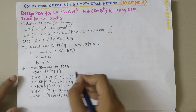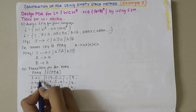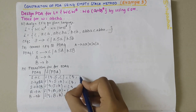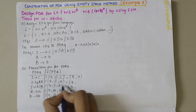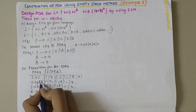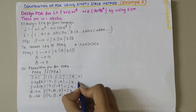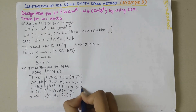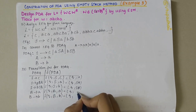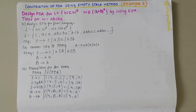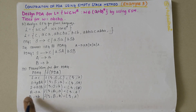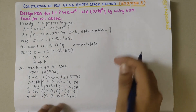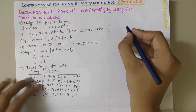After C, nothing remains so we write lambda. After A, S A is remaining so we write SA. After B, S B is remaining. After terminal 'a' (for A), nothing remains — lambda. After terminal 'b' (for B), also lambda. This completes the transition functions for the PDA.